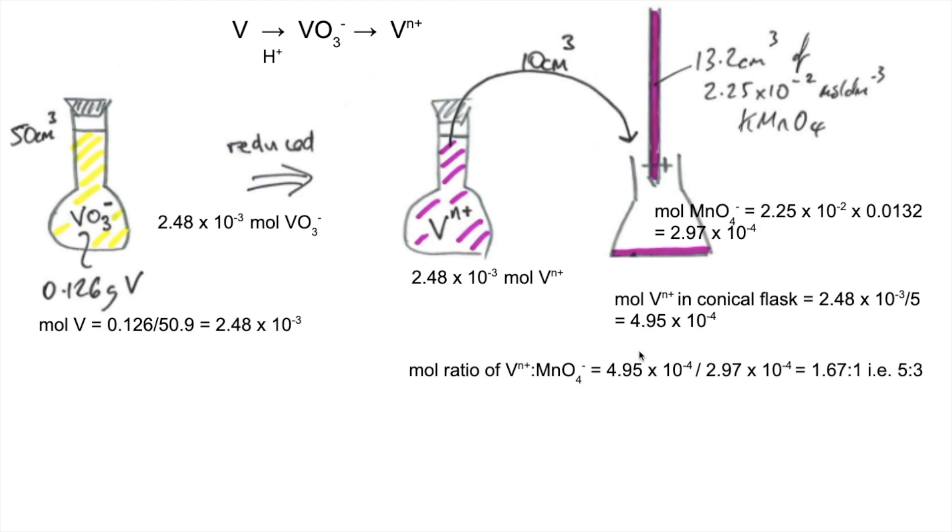So all I'm going to do is divide the moles of Vn plus by the moles of MnO4 minus. We get this 1.67 to 1. In other words, they are reacting in a 5 to 3 ratio. So there's obviously 5 lots of that to 3 lots of that.